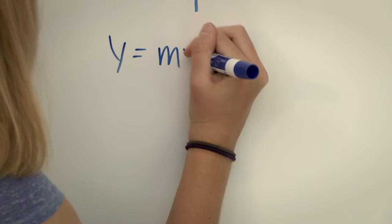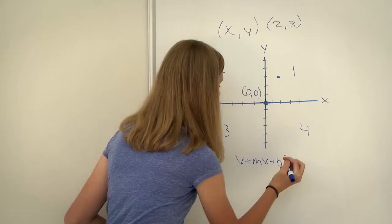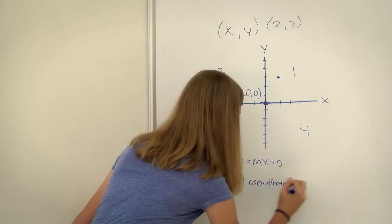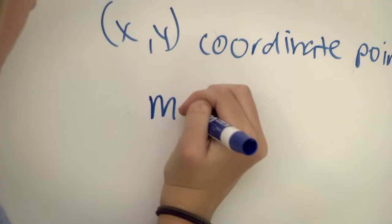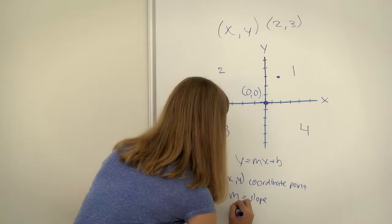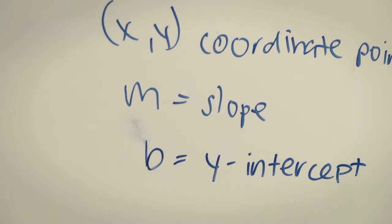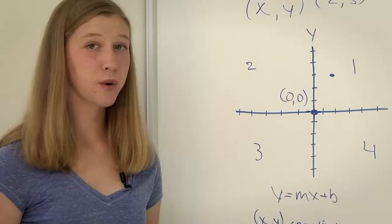The y-intercept is the most important when you're graphing a line. The equation for a straight line is y equals mx plus b, where x and y are your coordinate point, m is your slope, and b is your y-intercept.